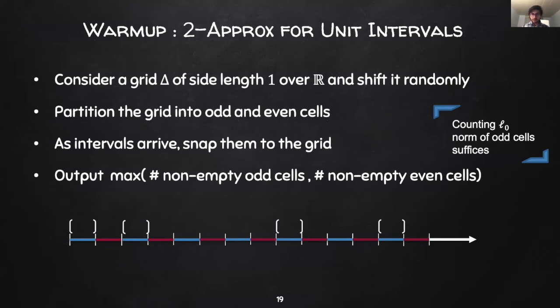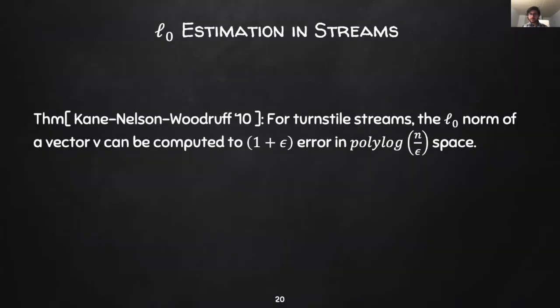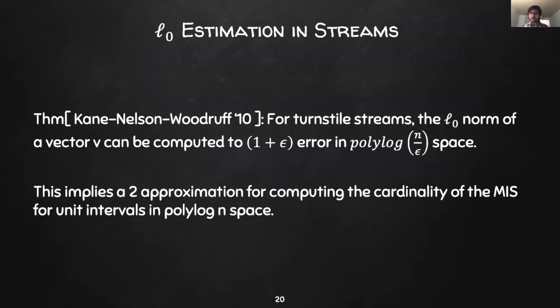Therefore, it suffices to compute the L0 norm of the odd and even cells separately. This yields a 2-approximation. Okay, so the only question now is how to implement L0 estimation in streams. L0 estimation is a well-studied problem. Kane, Nelson, and Woodruff in 2010 showed that for any vector v, we can obtain a 1 plus epsilon approximation to the L0 norm of v in poly log n over epsilon space. Combined with the analysis we showed on the previous slide, this yields a 2-approximation in turnstile streams.